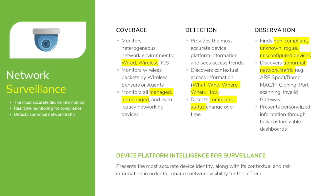When you talk about surveillance of the network, you want to make sure that you have proper coverage — meaning it has to cover both wired and wireless and all areas of your network. It also has to cover managed and unmanaged devices. For example, an agent implementation is going to leave out BYOD and unmanaged devices, especially IoT devices. You want your coverage to span across the entire network and include all active nodes.